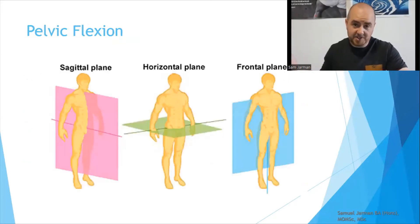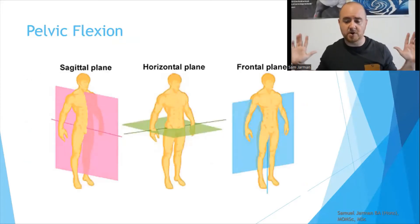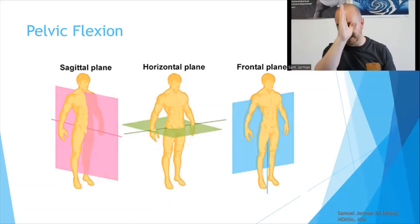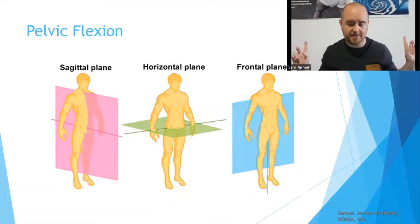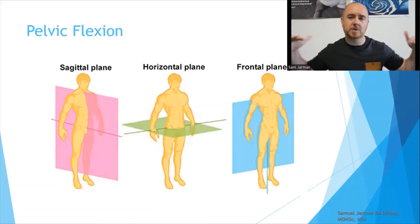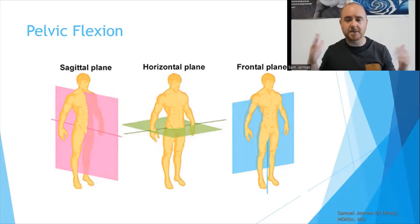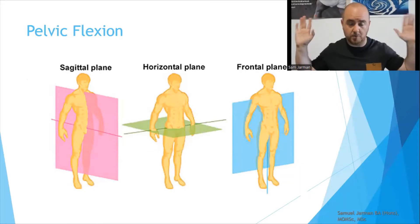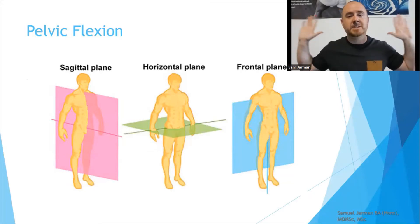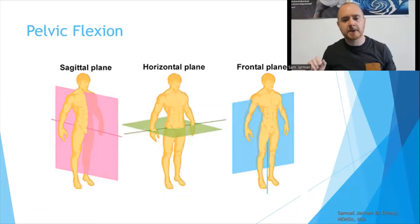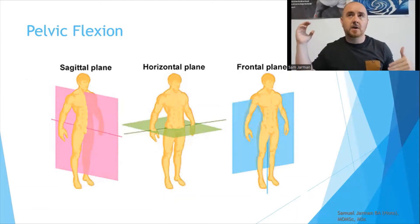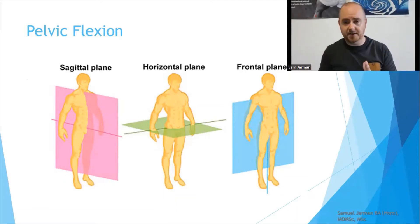For pelvic flexion, we have a quick overview of planes. The sagittal plane is a 50% cut left to right. The horizontal or transverse plane is a 50% cut top to bottom. The frontal or coronal plane is a 50% cut back to front. Axes are perpendicular to planes.